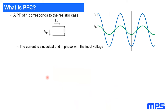From an electrical point of view, the ideal case, which gives a power factor of one, is a simple resistor. If you apply a sinusoidal voltage across a resistor, the current will also be sinusoidal and in phase with the voltage.